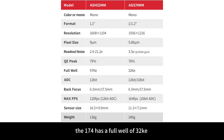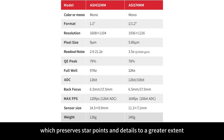In terms of full well, the ASI-174 has a full well of 32KE, and the ASI-432 has a full well of up to 97KE, which preserves star points and details to a greater extent.